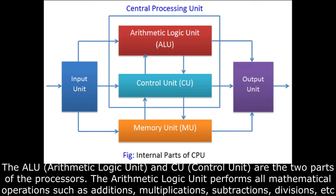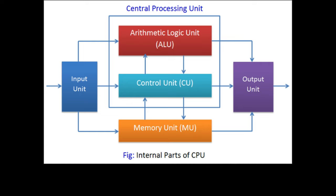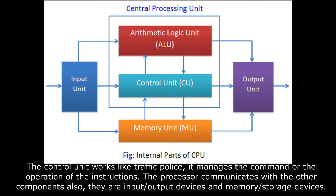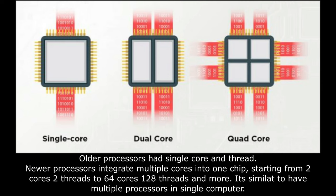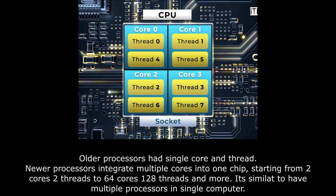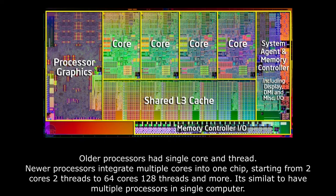The arithmetic logic unit performs all mathematical operations such as additions, multiplications, subtractions, divisions, etc. The control unit works like traffic police — it manages the command or the operation of the instructions. The processor communicates with other components also, including input-output devices and memory storage devices. Older processors had single core and thread; newer processors integrate multiple cores into one chip, starting from 2 cores 2 threads to 64 cores 128 threads and more. It's similar to having multiple processors in a single computer.